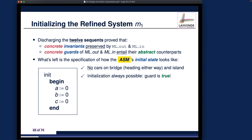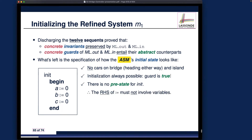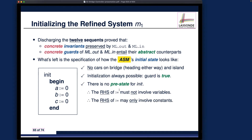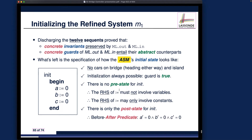Always remember: for the init event it's always unconditional — no guards, guard-free. There's no pre-state for the init; it simply doesn't make sense for the init event to have any pre-state. We only have a notion of post-states. So the right-hand side of the becomes operator should not involve any variables — we only involve constants or literals. The before-after predicate will be: a' = 0, b' = 0, and c' = 0.